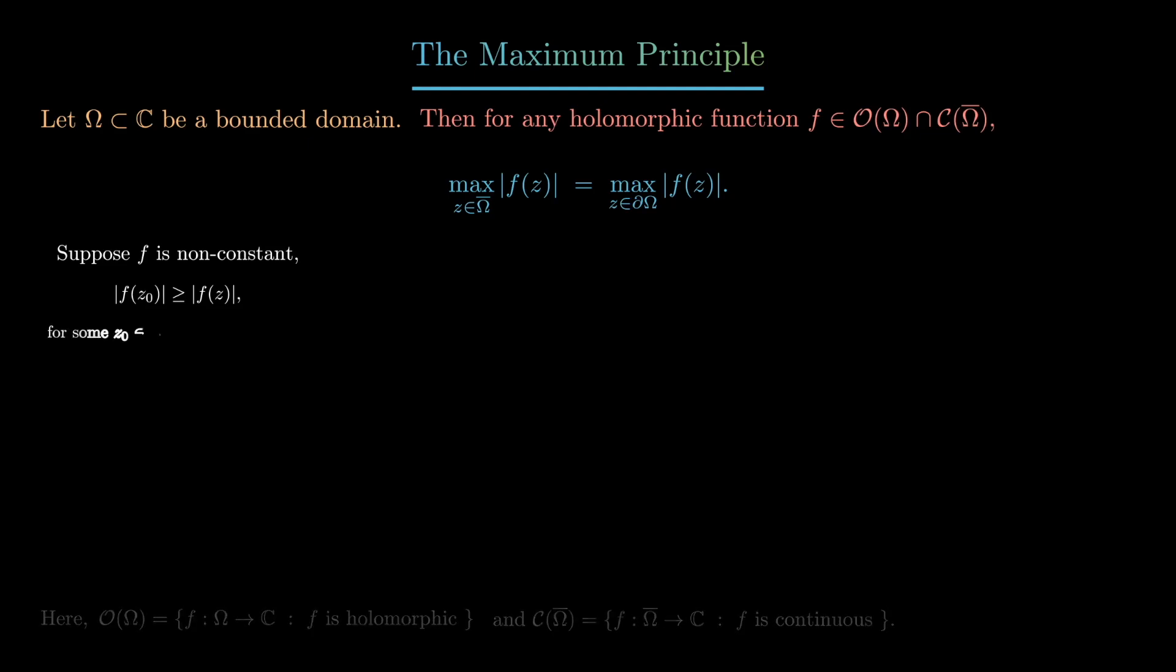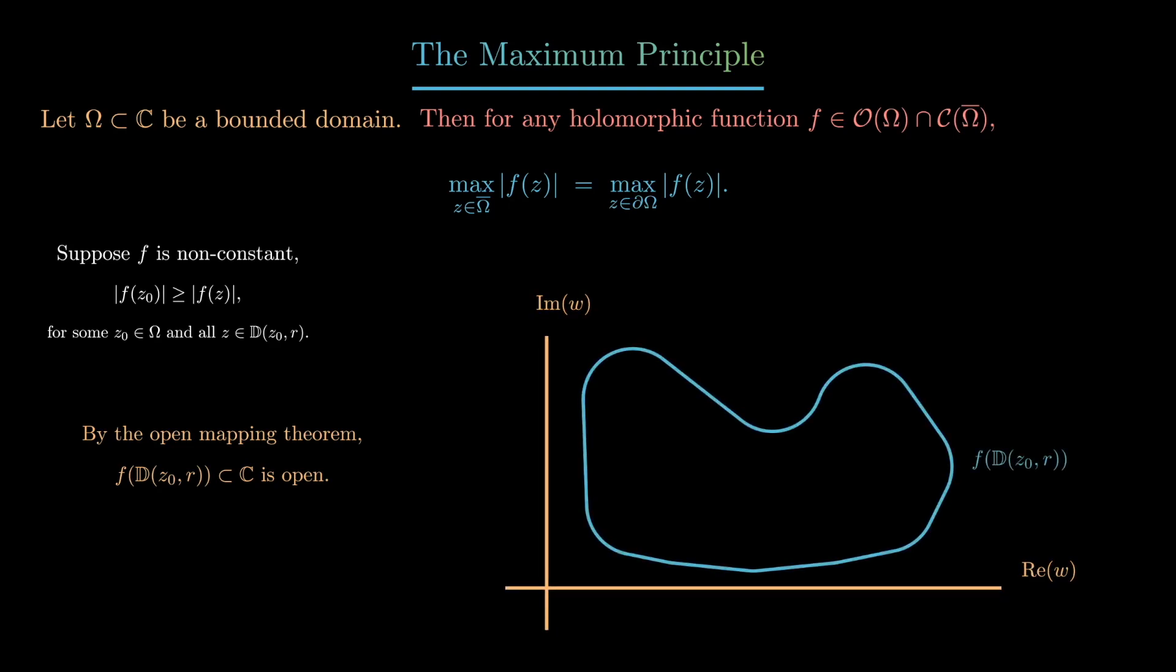By the open mapping theorem, we know that if we take the image of this small open neighborhood, that will give us another small open neighborhood. If we look at this image, we'll look at the point f(z₀) and we'll take a small neighborhood around it.